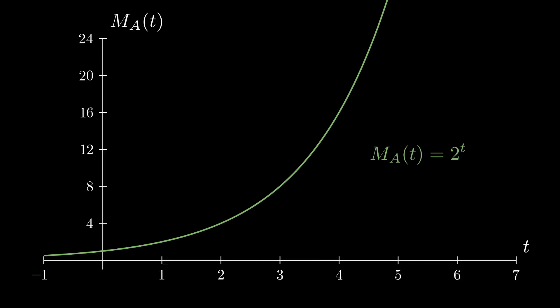When looking at t equal to 0 the function gives us 2 to the 0 equal to 1. Furthermore if we take a look at 2 to the 1, 2 to the 2, 2 to the 3 and 2 to the 4 and so on we can see that the overall population mass doubles each day.